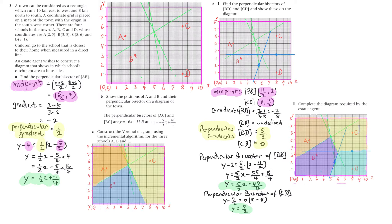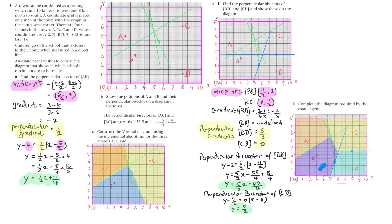Complete the diagram required by the estate agent. A hasn't changed. B is going to change because we've now got this line between B and D, so this area here has moved into the D region because the perpendicular bisector goes up like that — so I've recoloured that. C is also losing some area because it used to own this area here which was closer to C, but now it's closer to D, so that becomes the D area, and both B and C have shrunk.